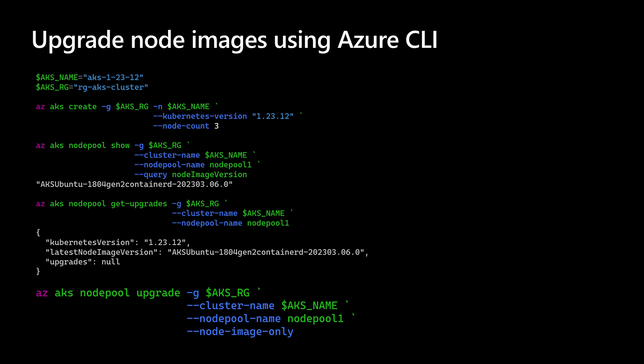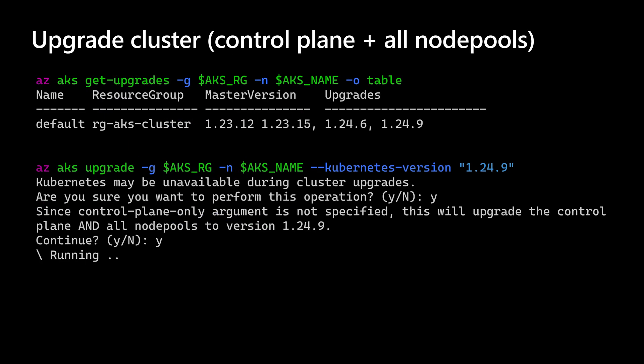When performing a node image upgrade, AKS performs a rolling upgrade of the nodes, which is almost the same process as upgrading the cluster. When running az aks upgrade to a newer Kubernetes version, AKS also performs a rolling upgrade for the nodes one by one. The difference is that during a cluster upgrade, in addition to updating the node image version, AKS also upgrades the Kubernetes version.